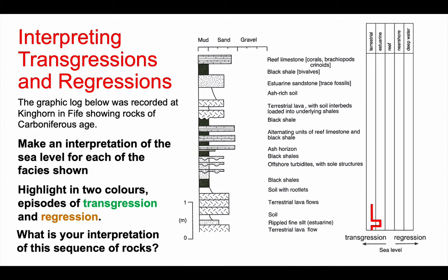The estuarine one becomes terrestrial again, with a soil, so it has to be on land, so we get a movement to the left, and that continues then as terrestrial. Can you continue this line all the way to the top of the sequence, showing the changes as you go?